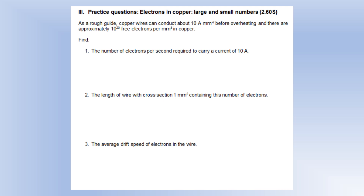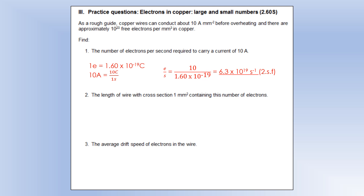The number of electrons per second required to carry a current of 10 amps. First of all, let's consider what 10 amps is. One electron has a charge of 1.6 times 10 to the minus 19 coulombs, and 10 amps is 10 coulombs per second. So if we take that 10 and divide by the charge of one electron, that tells us how many electrons per second have to pass through for a current of 10 amps.